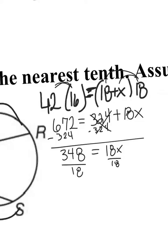Divide by 18 on both sides to get the X by itself. We are rounding to the tens place. 19.3 equals X, and there is our answer.